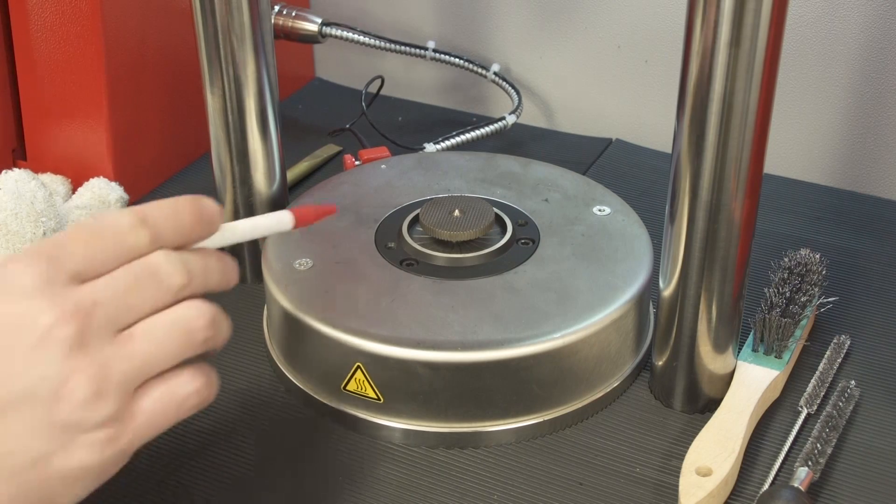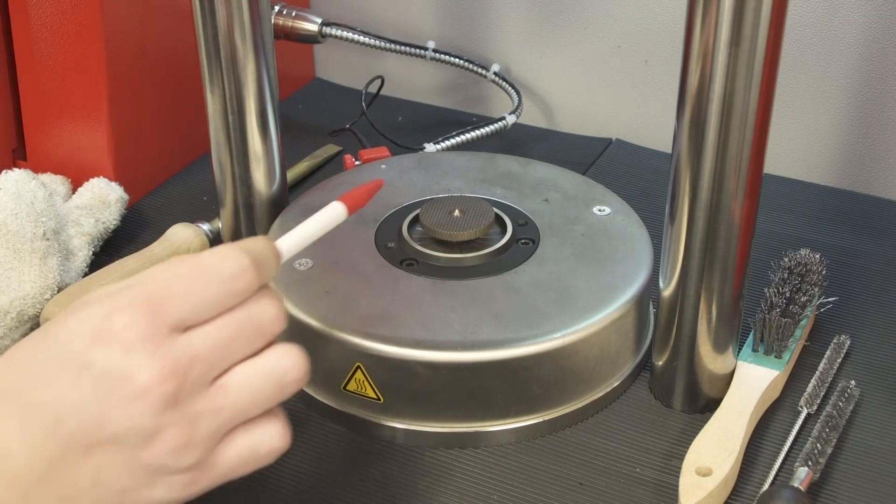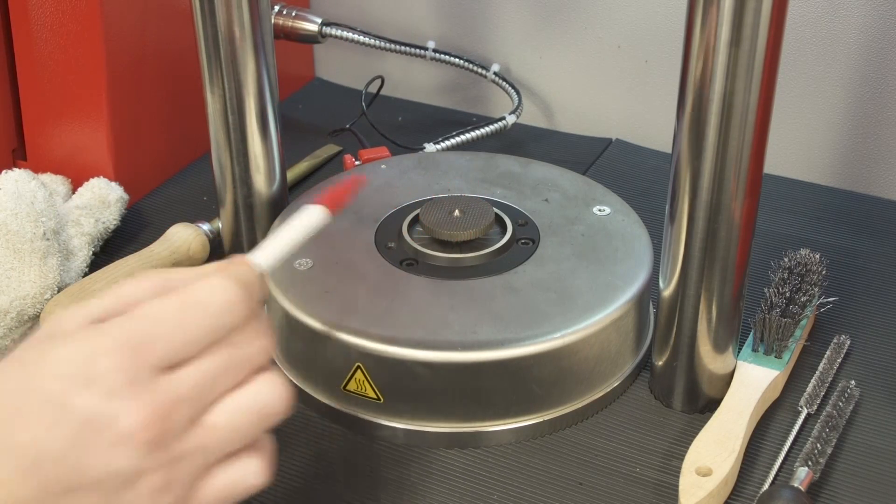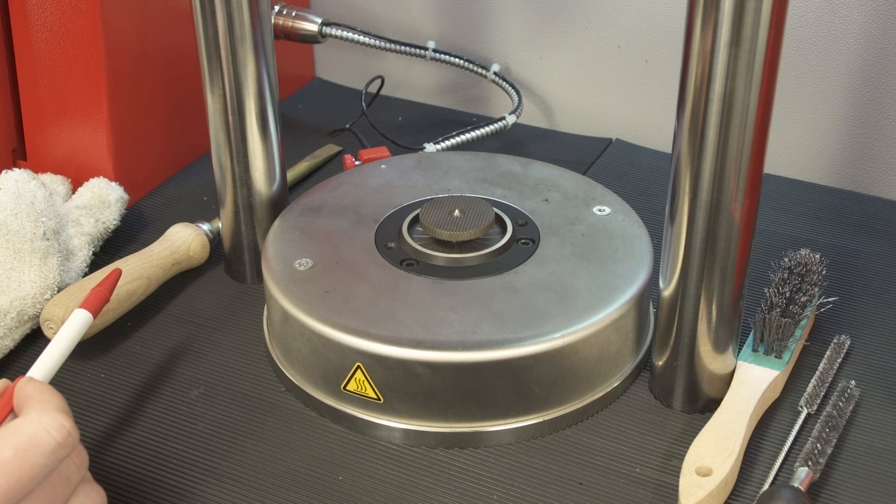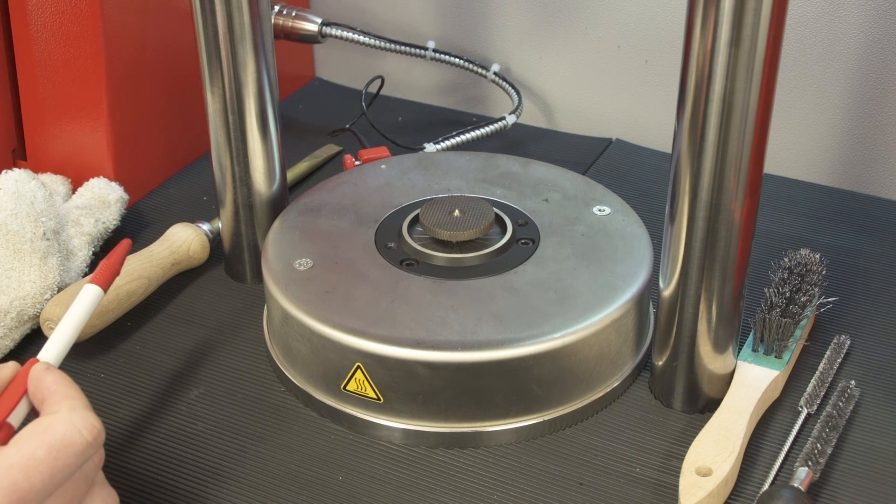A Mooney viscometer consists of a heated lower and upper die as well as an embedded rotor. The rotor is turning with a predefined speed according to international standards, typically 2 rpm.